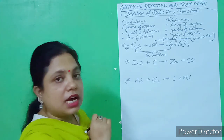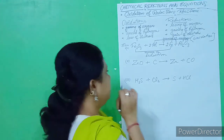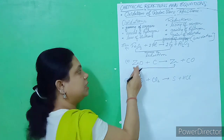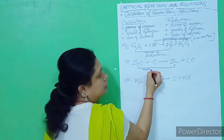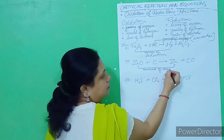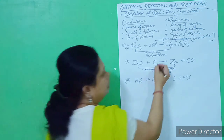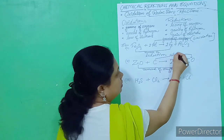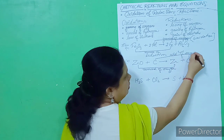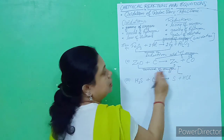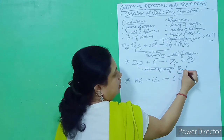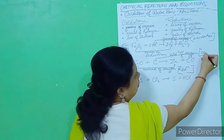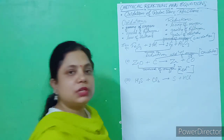Second example: zinc oxide plus carbon forms zinc and carbon monoxide. When we observe zinc oxide to zinc, there is removal of oxygen — that is reduction. And carbon forms carbon monoxide due to the addition of oxygen — that is oxidation.